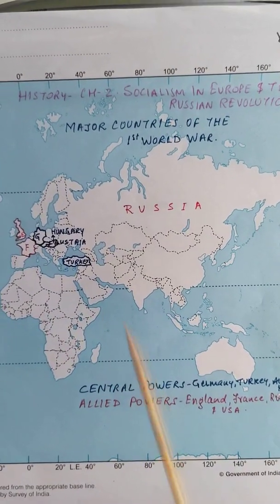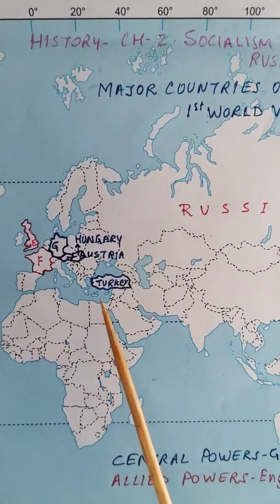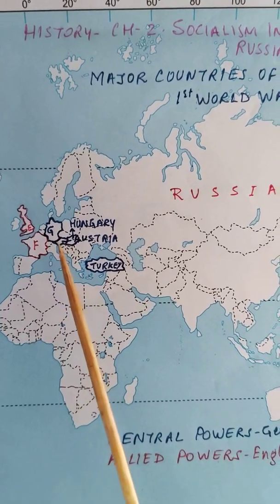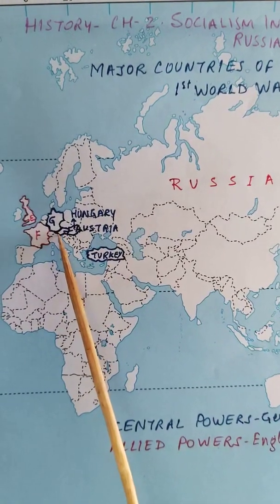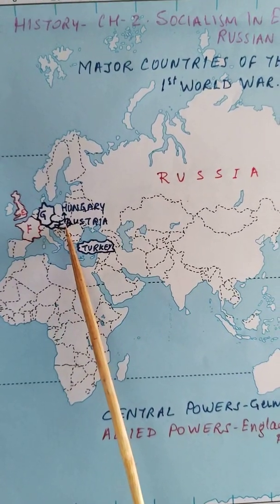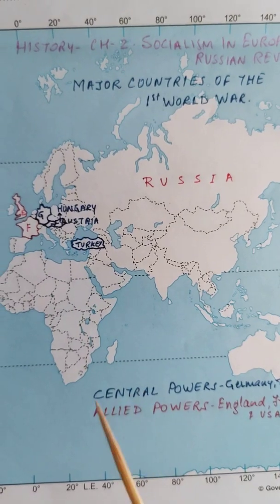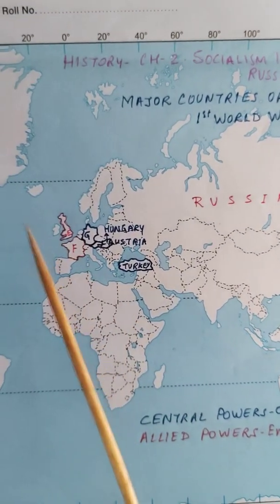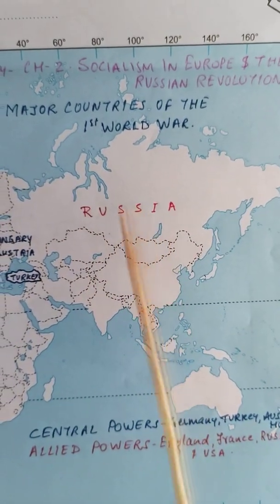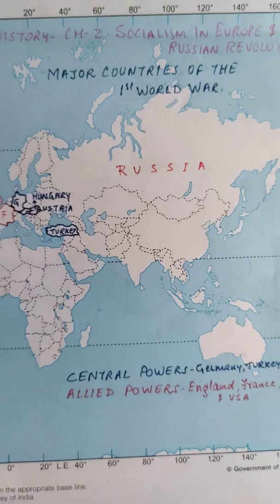The Central Powers are marked with blue: Turkey is just above the Mediterranean Sea towards the eastern side, Germany is in the middle, Austria is to the southeastern part of Germany, and Hungary is together with Austria. Allied Powers are marked with red: England, France, Russia, and USA.